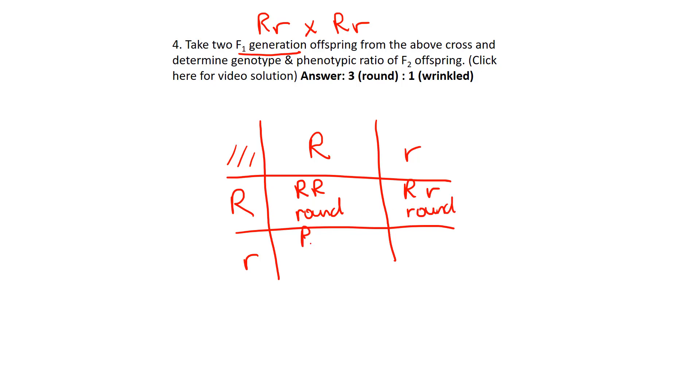That's also round. Capital R, little r is round. And the only one we have here is this last box, which is wrinkled.